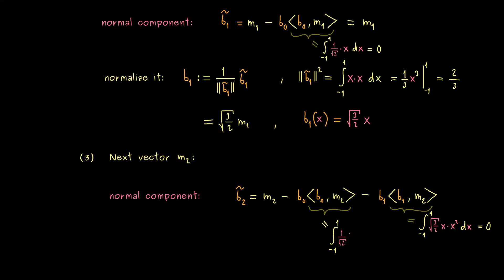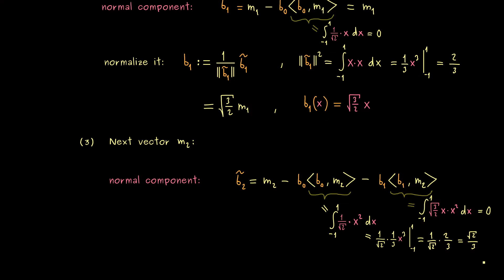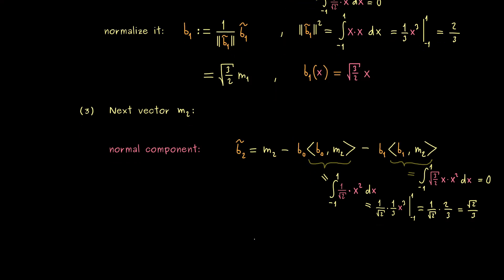However, the second integral here might be more complicated. There we have to combine the constant function 1 over the square root of 2 with x squared. Also not a problem, because the antiderivative is simple. You might remember this calculation from before. What we get out here is 1 over the square root of 2 times 2 thirds, so it's just the square root of 2 over 3. Now please don't forget, we have to multiply this with the constant function b0. And b0 also has a square root of 2 in, so this will cancel out. So actually we have here minus 1 third times m0. As a reminder, if you write b2 tilde as a function depending on x, we get out x squared minus 1 third. So quite a nice polynomial in that sense.